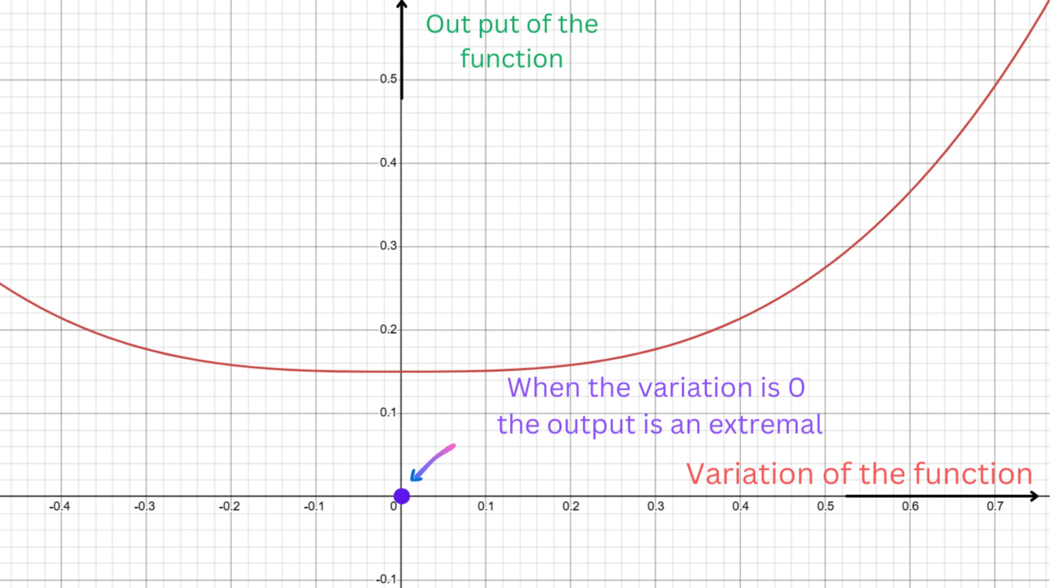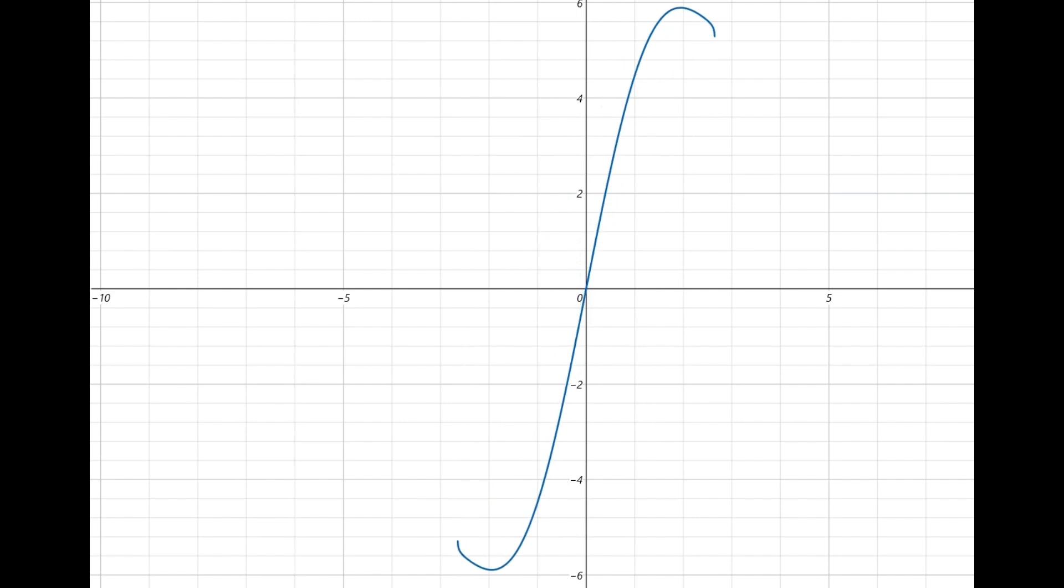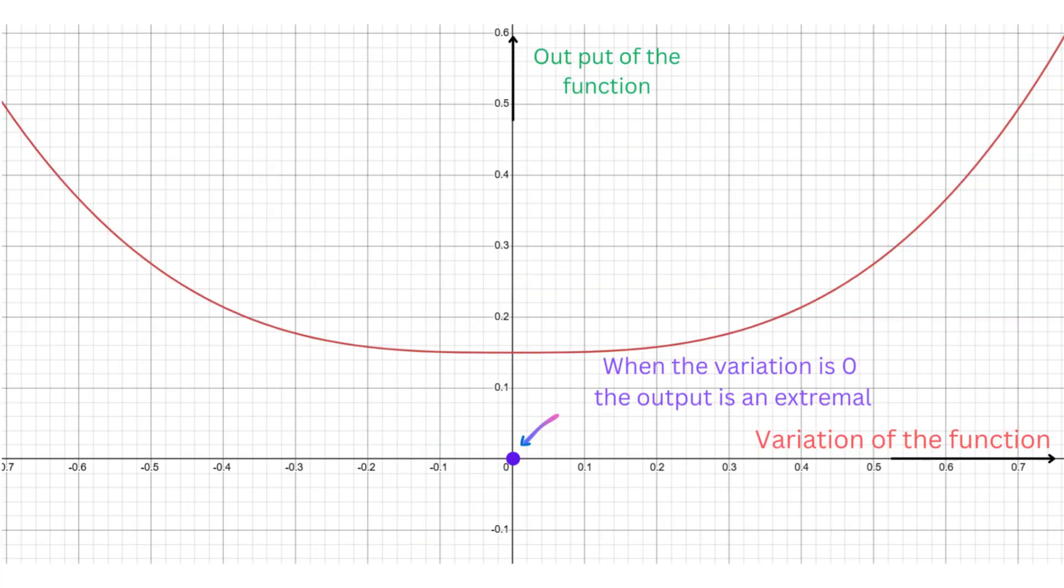As we did before, we can now think of this relationship graphically as follows. As the parameter deviates away from zero, the function's error increases, and the output also deviates away from the optimal output, which is the extremal. By looking at this, it becomes immediately clear that our problem has turned into a simple optimization problem.